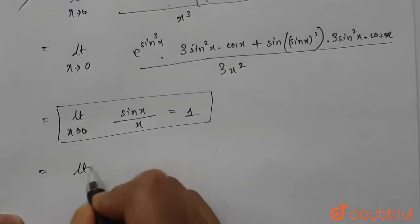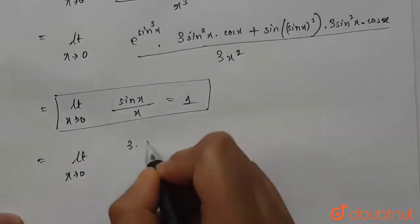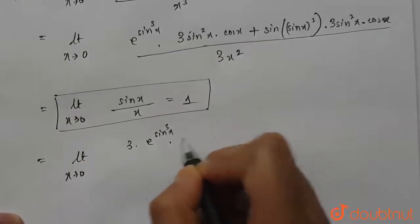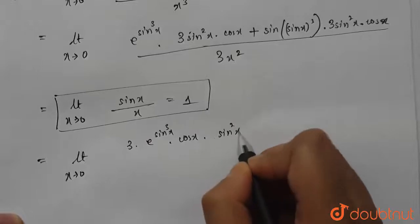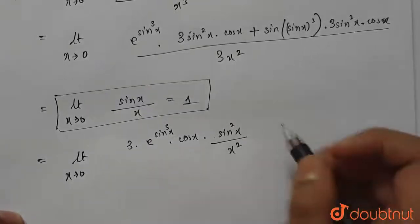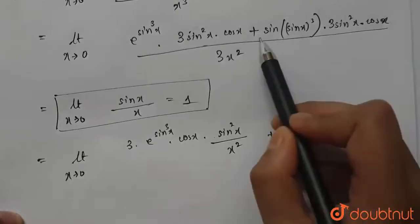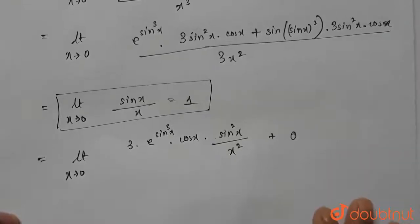So we can write this as limit x→0 of 3 e^(sin³x) · cos x · sin²x / x². Now this part—if we put the value of x as zero, then this part will definitely be zero, so we don't need to write that here.